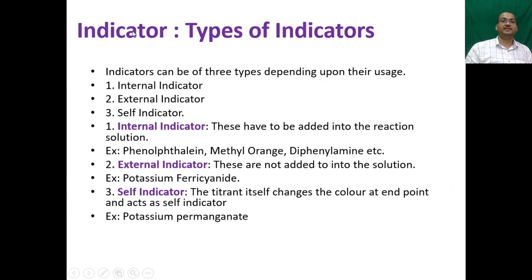Now question arises, what are the types of indicators? Indicators can be of three types depending upon their usage: internal indicator, external indicator, and self indicator. The internal indicators have to be added into the reaction solution. Examples: phenolphthalein, methyl orange, diphenylamine. External indicators are not added into the solution. For example, potassium ferricyanide - one drop of potassium ferricyanide solution is taken on a glass plate, then the reaction mixture solution is added to this indicator to see the color change. Self indicator - the titrant itself changes the color at the end point and acts as self indicator. Example: potassium permanganate.